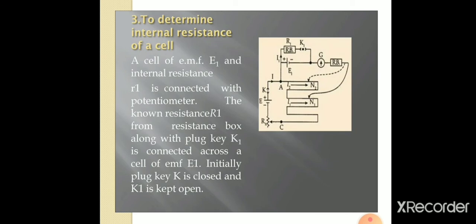Now let us see how a potentiometer is used to find the internal resistance of a cell. Let a cell of EMF E1 and internal resistance R1 be connected with the potentiometer. The known resistance R1 from the resistance box along with the plug key K1 is connected across a cell of EMF E1.